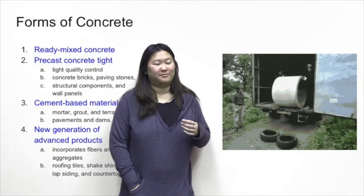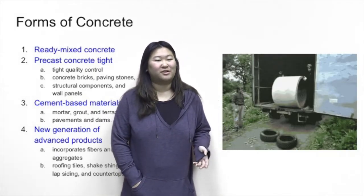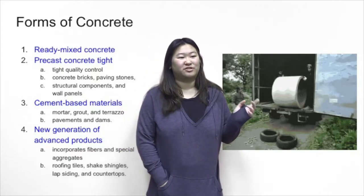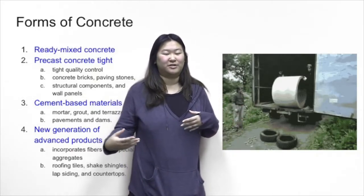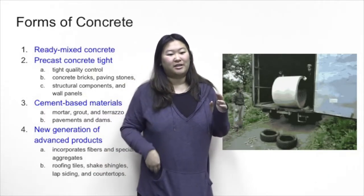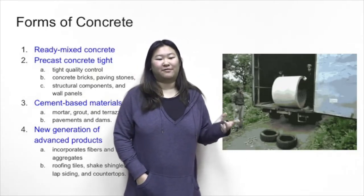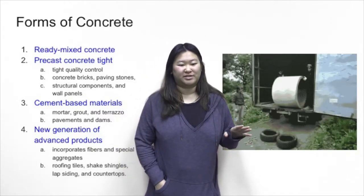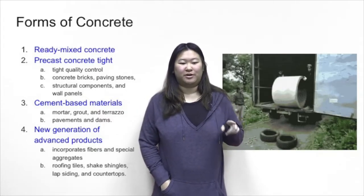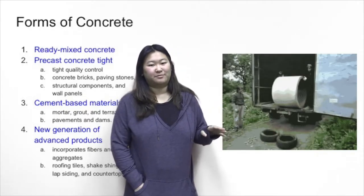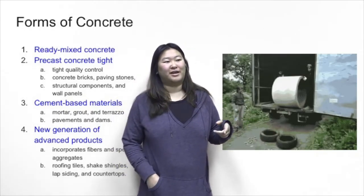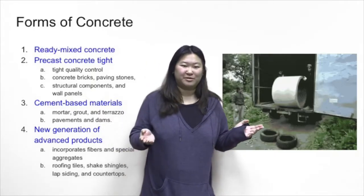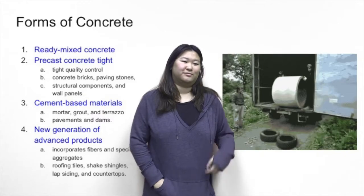There are four main forms of concrete. The first is ready-mixed concrete, which makes up about 75% of concrete used daily — generally what you see inside cement mixer trucks, pre-mixed so you just add water and pour. Number two is pre-cast concrete, generally used in factories for casting. Number three is cement-based materials, which aren't technically cement but have many of the same properties, such as mortar, grout, and pavements. Number four is new generation products that mix in different aggregates to make concrete stronger and more resistant to cracking, including mixing in fibers.